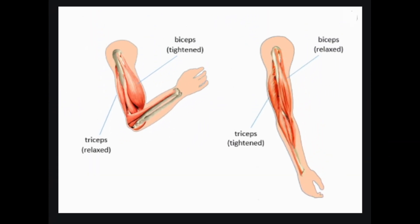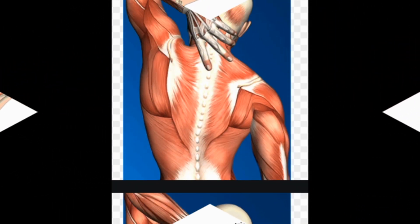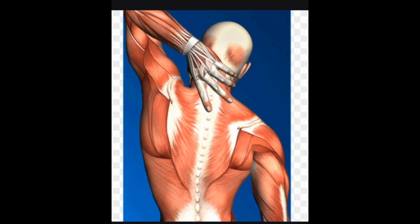Muscle relaxers: a list of prescription medications. Introduction. Muscle relaxers, or muscle relaxants, are medications used to treat muscle spasms or cramps. Muscle spasms or cramps are sudden involuntary contractions of a muscle or group of muscles. They can be caused by too much muscle strain and lead to pain, and are associated with conditions such as lower back pain.